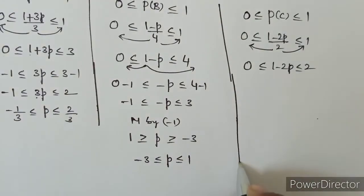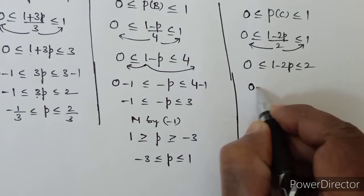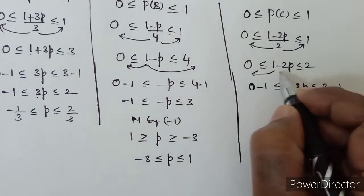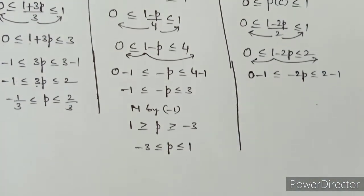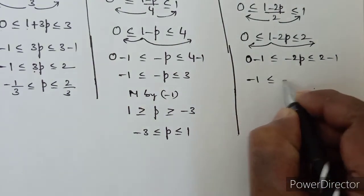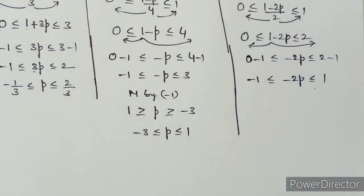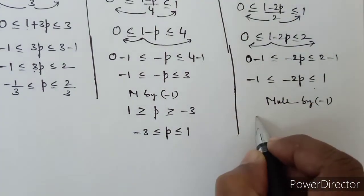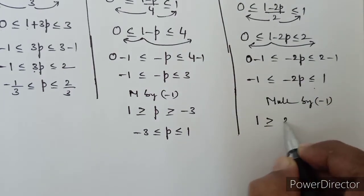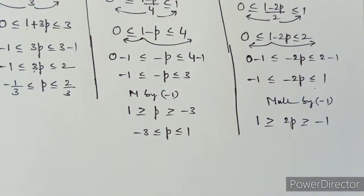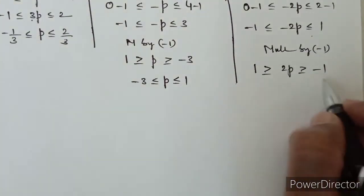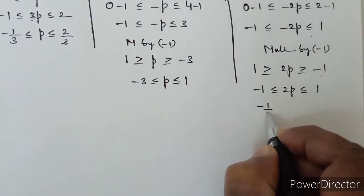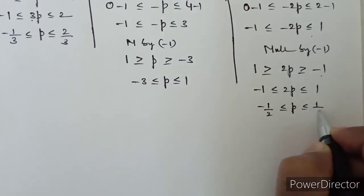Coming to the third inequality for P(C): subtracting 1 gives -1 ≤ -2p ≤ 1. Multiplying throughout by -1: 1 ≥ 2p ≥ -1. Writing in reverse order: -1/2 ≤ p ≤ 1/2. This is equation 3.